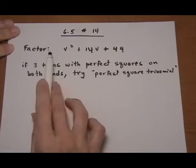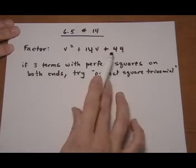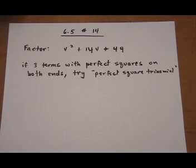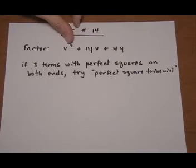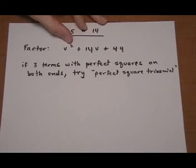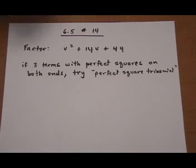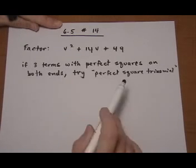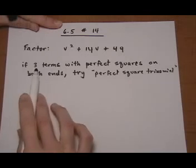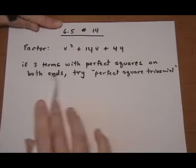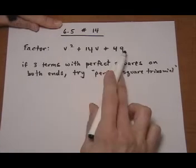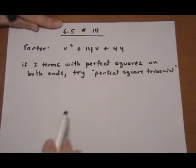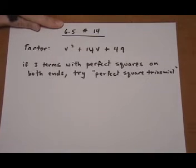So first we have factor v squared plus 14v plus 49. That's a trinomial, so we could go ahead and use that normal trinomial factoring from sections 6.3 and 6.4. Or we could look and identify that we might want to try the perfect square trinomial factoring. The way you identify it is if you have three terms with perfect squares on both ends. The v squared and the 49 are both perfect squares, then you want to try perfect square trinomial factoring.